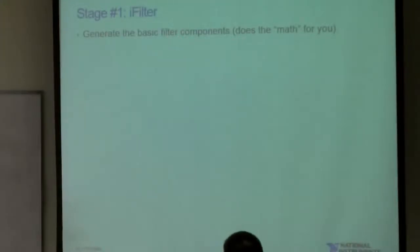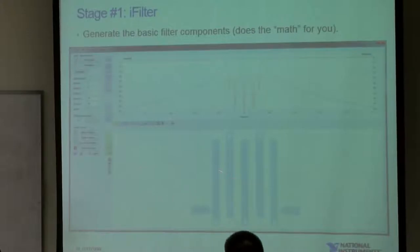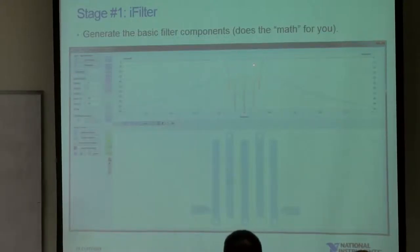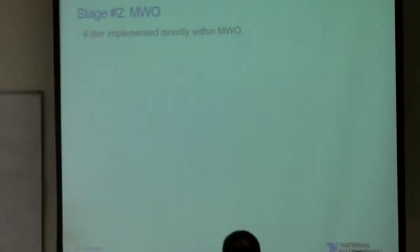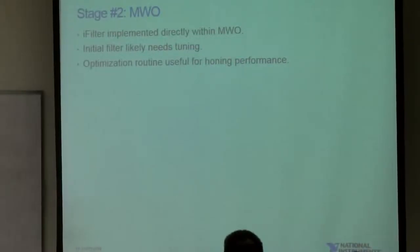Starting with iFilter: it generates the basic filter components and does the math for you. Here's what iFilter looks like within the tool — you type in the goals you want to meet, pick the type of filter, and it generates the design, telling you the required resonator lengths and spitting out the closed-form models so you can simulate and see how it looks. But the initial filter will likely need tuning because it's only based on mathematical models — there are many other effects in the circuit not accounted for in the initial synthesis that you'll have to tune and account for.